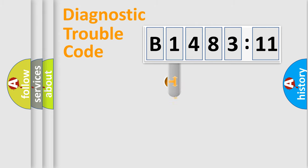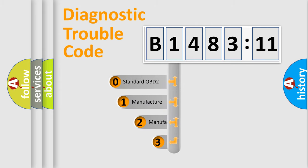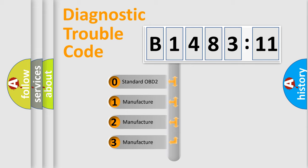Powertrain, Body, Chassis, Network. This distribution is defined in the first character code.